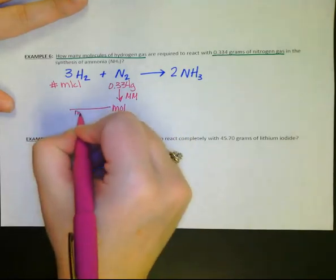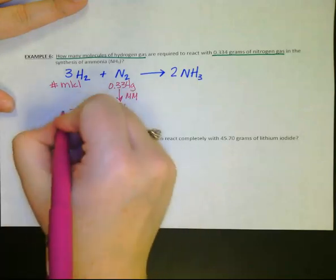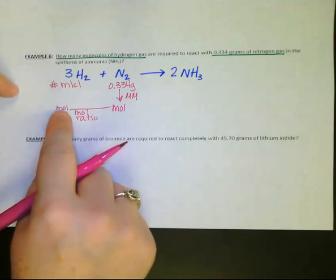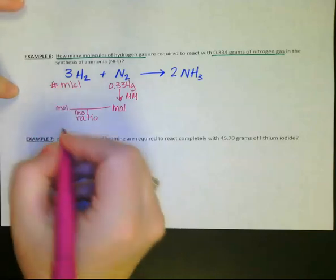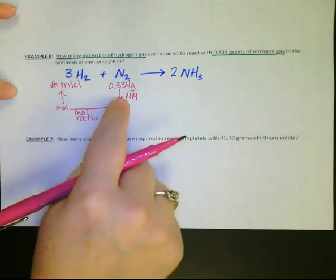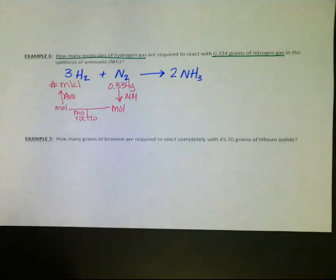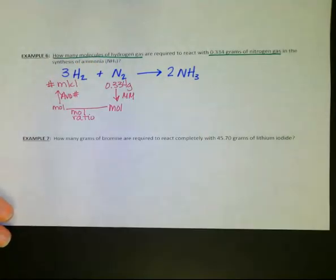I'm going to scoot over using my mole ratio to get me across that bridge. Once I'm across the bridge, that will give me the number of moles of hydrogen gas, but that's not what I want. How do I get from moles to molecules? Here comes Avogadro's number, and we're going to use Avogadro's number to get across that little baby bridge.